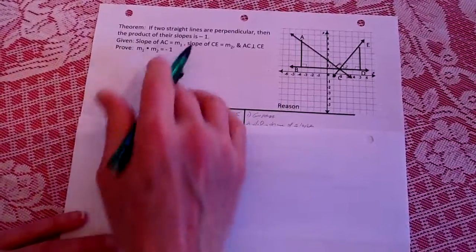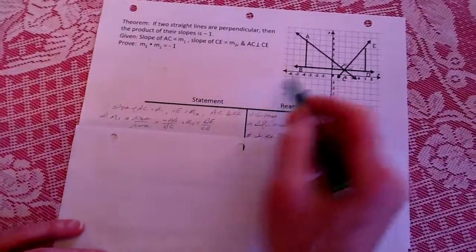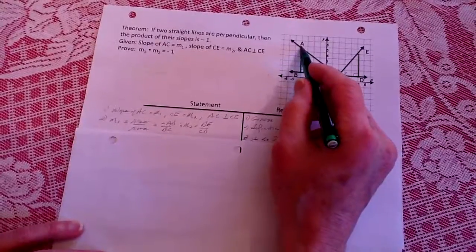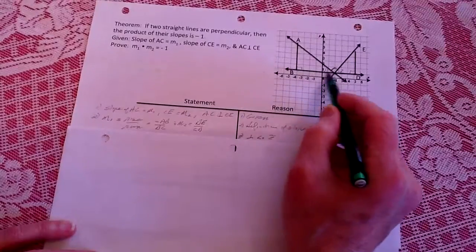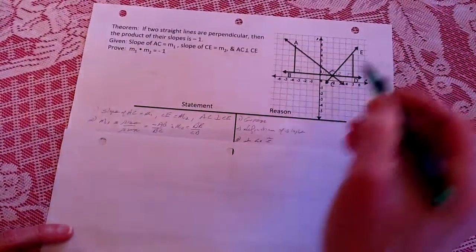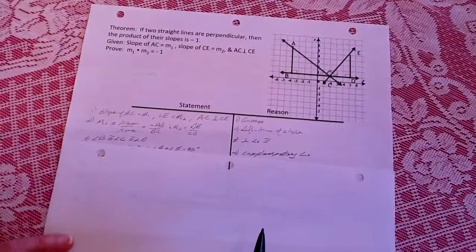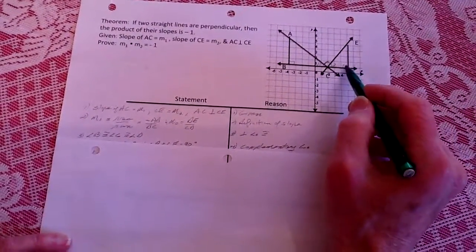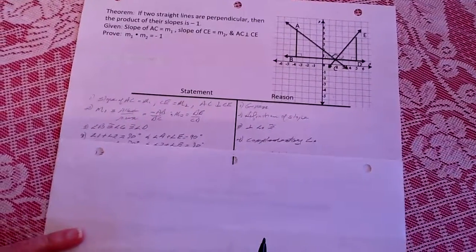First, repeat the given. We're talking about m1 being the rise over run, so that's going to be a negative—you notice this is downhill—so this is negative AB over BC, which is the run. And m2 is DE, which is a rise over the run of CD. That's the definition of a slope.